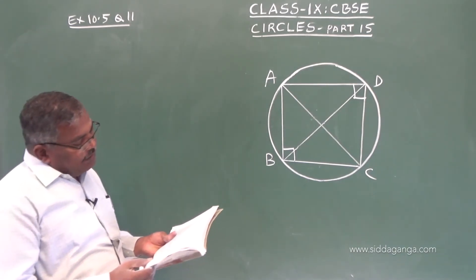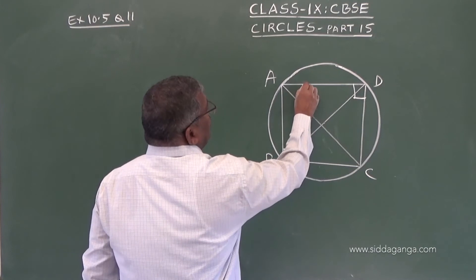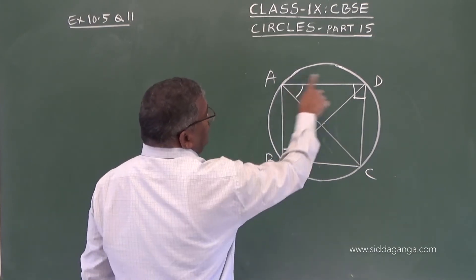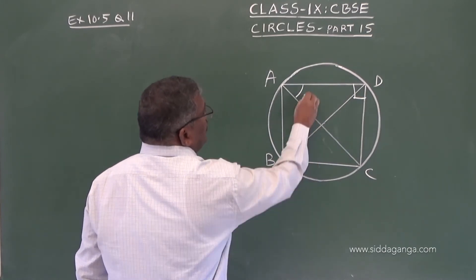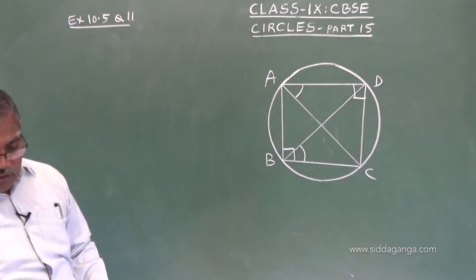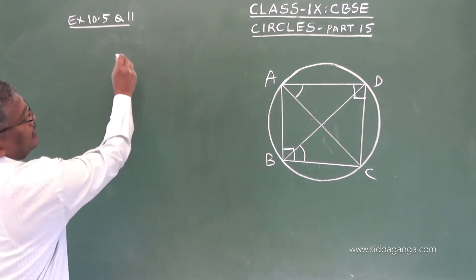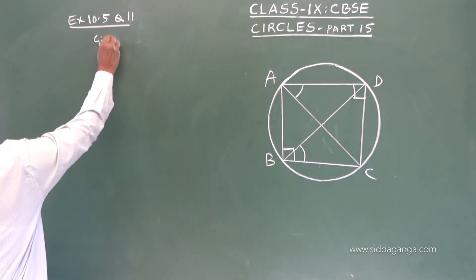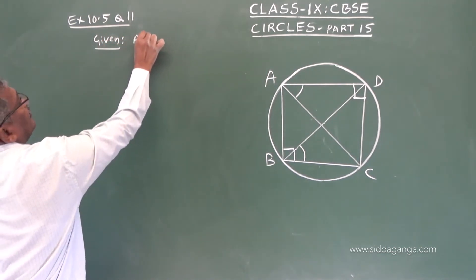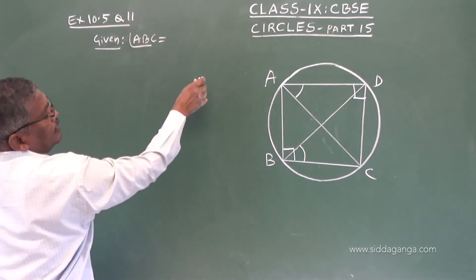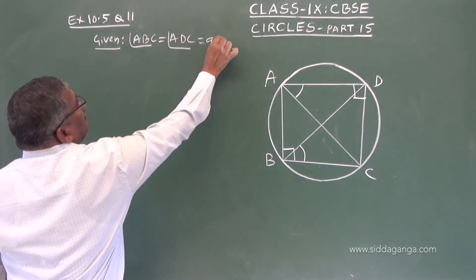We have to prove that angle CAD equals angle CBD. Given: angle ABC equals angle ADC equals 90 degrees. Now consider triangle ABC. By the angle sum property: angle ABC + angle BAC + angle CAB equals 180 degrees.